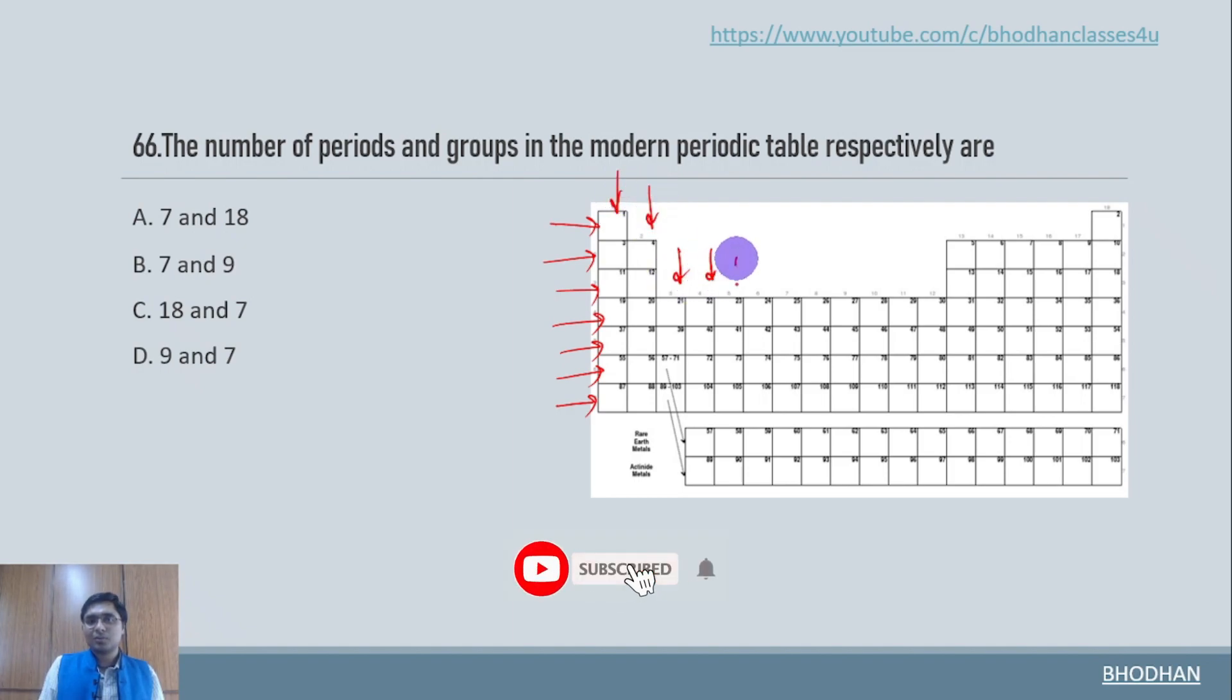And so on. Here we have 17th, here we have 18th. So vertically what we see, they are groups. And horizontally what we see, they are periods. So we have 7 periods and 18 groups. So here the answer is option A.